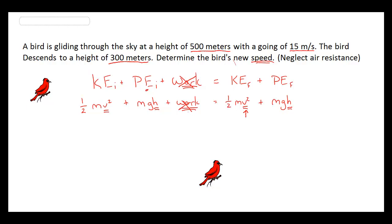What we're simply going to do now is look at the amount of energy in the system initially with the kinetic energy. We're going to calculate it. We're also going to calculate the amount of potential energy that the bird has when it flies at 500 meters.